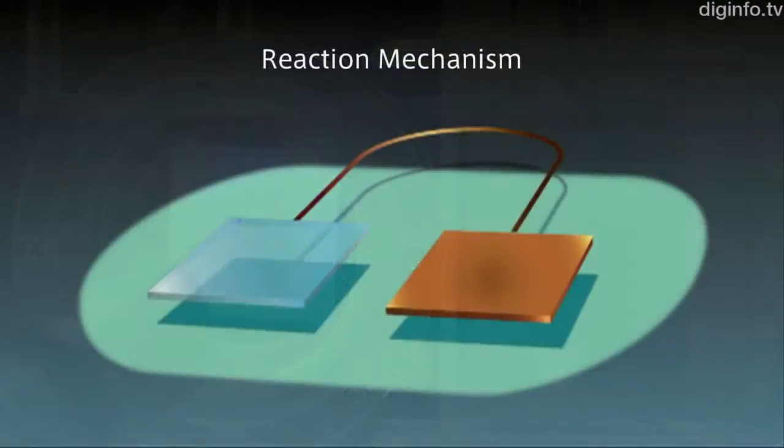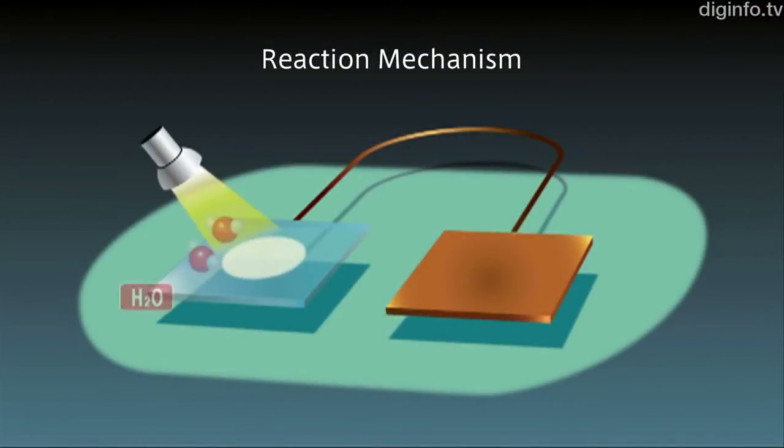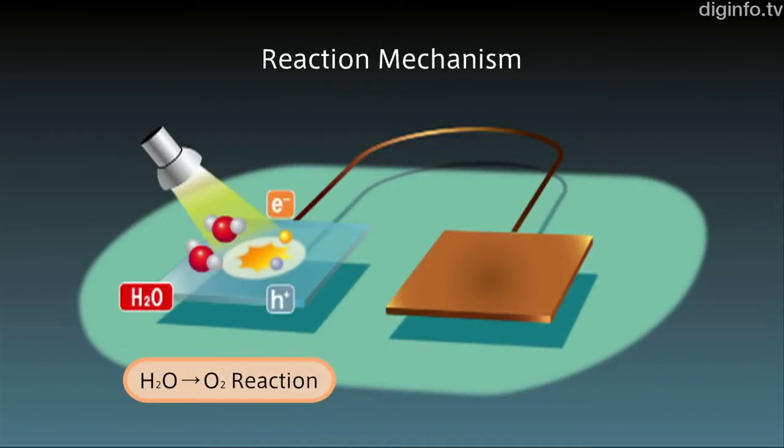Here's how the reaction works. First, the photoelectrode is filled with water and illuminated. The light is absorbed and the water molecules react, producing electrons, oxygen molecules, and hydrogen ions.